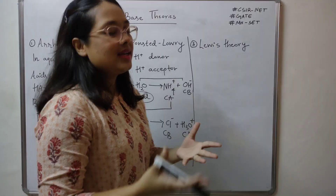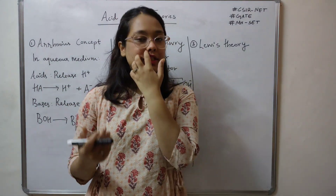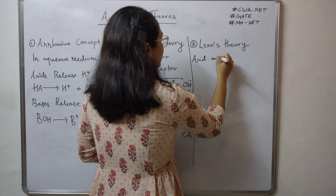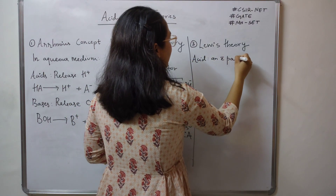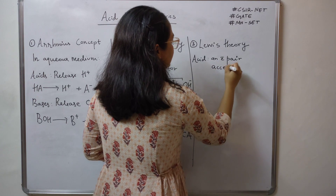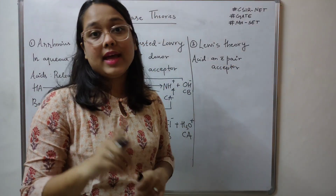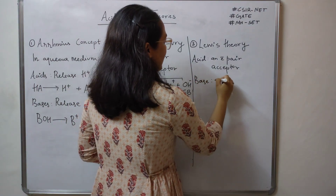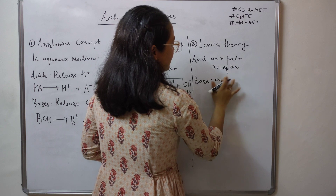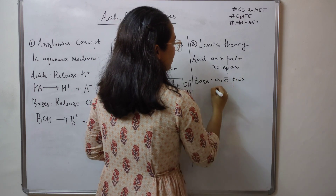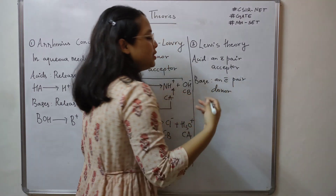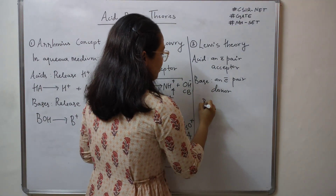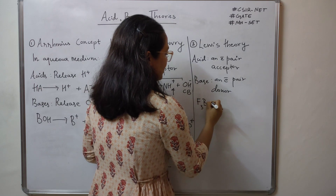That is all with respect to Bronsted-Lowry. Let us move towards Lewis theory. According to Lewis theory, the definition of an acid is: an acid is an electron pair acceptor — any species which can accept a pair of electrons. And a base can be defined as an electron pair donor — any species which can donate a pair of electrons.